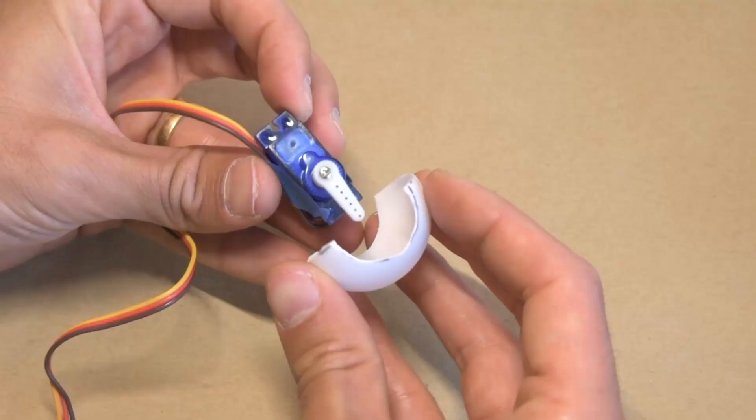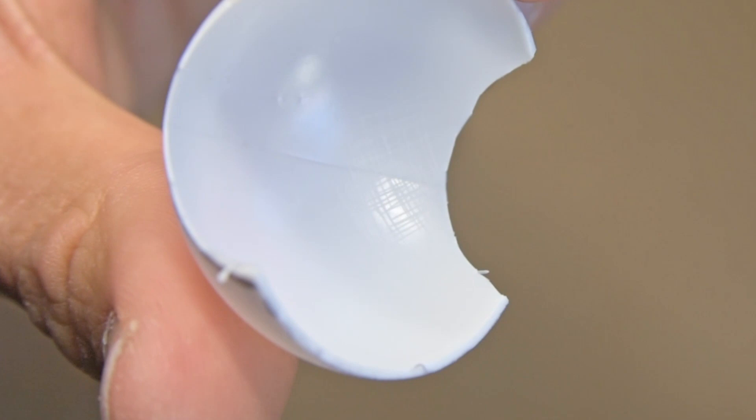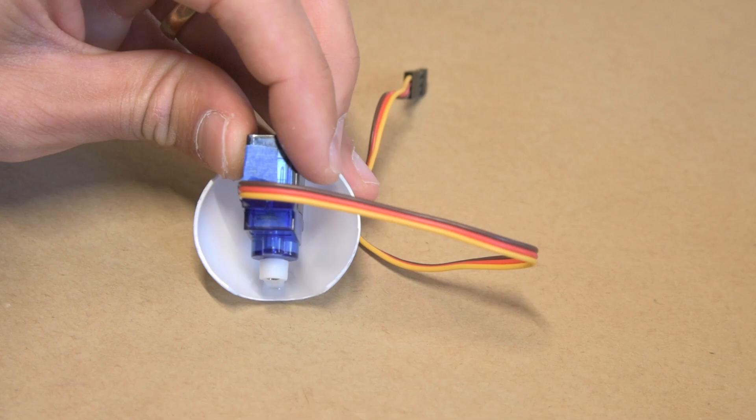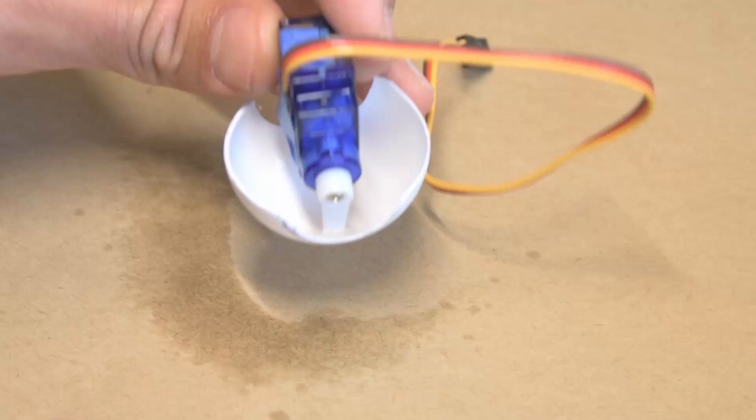The servo will mount directly in the middle of the ping pong ball. The shaft's center should be in line with the hemisphere cut. To glue it, I roughed up the inside surface and then used thick CA glue. Once everything's lined up, a quick spray with accelerator locks everything in place within about 15 seconds.